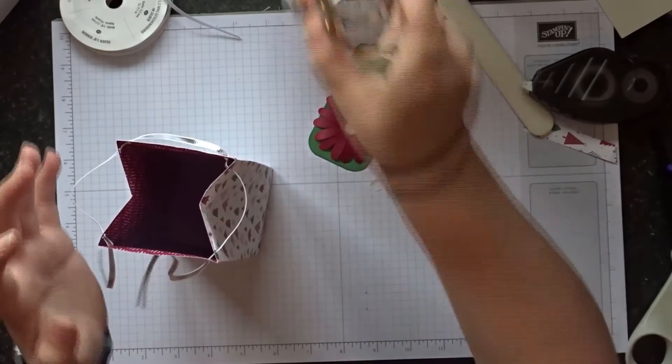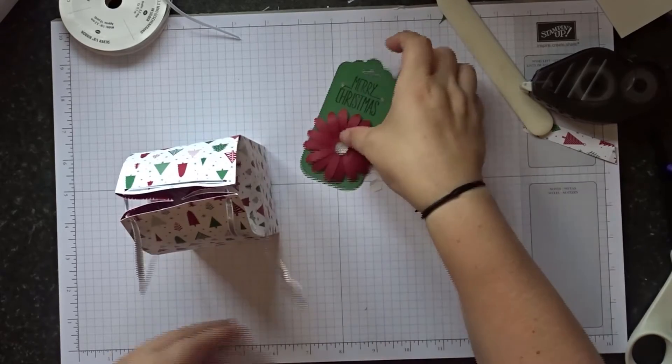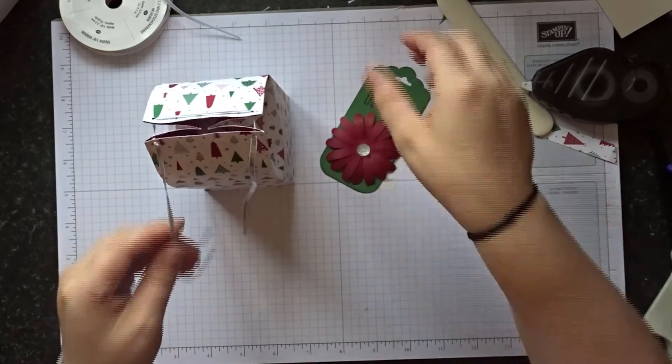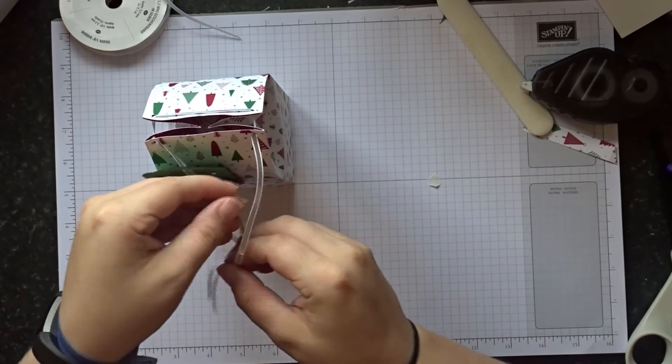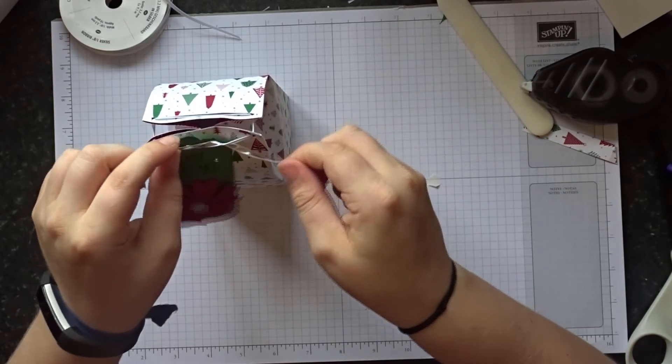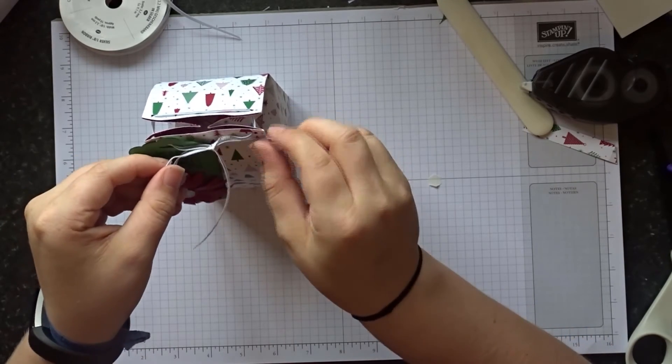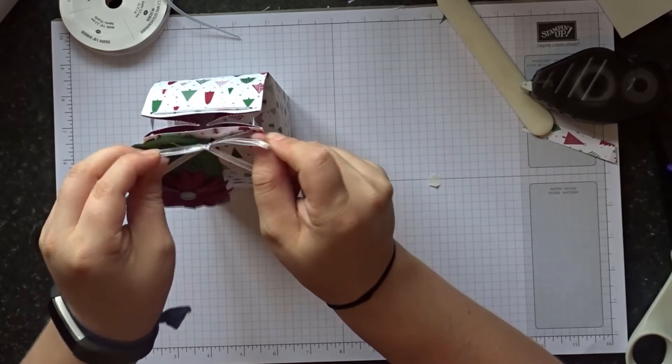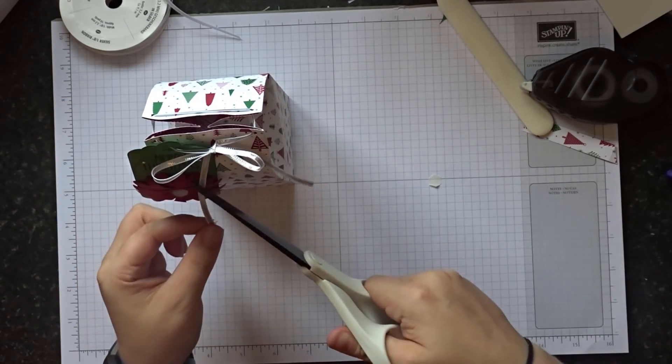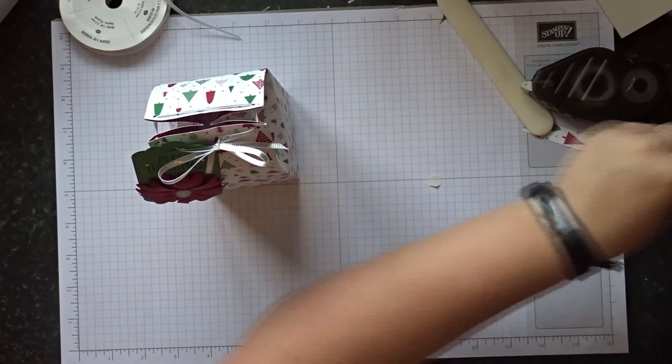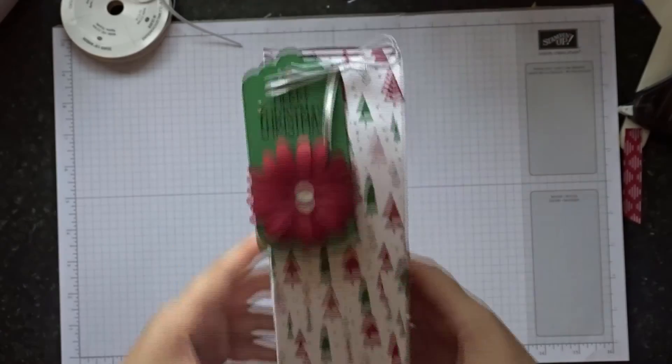Cut some off, put in our gift and then we can pull it tight and add our gift tag. So just slide your gift tag on and then we're just going to tie this. As you all know I'm not great at bows. There we go, there is a beautiful gift bag with a little gorgeous gift tag ready for Christmas.